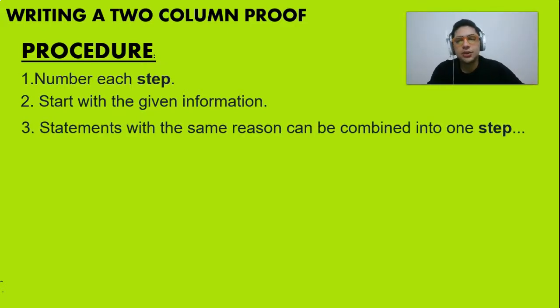After that, you're going to write the statements with the same reason that can be combined into one step. So that means if you have two vertical angles on one side and the same or other two vertical angles on the other side, because you are using the same piece of information, vertical angles, you can actually write these statements that have the same reason in just one step.